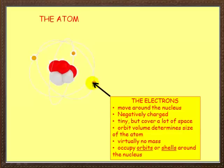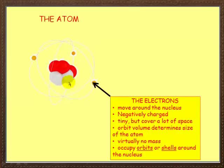They have virtually no mass — compared to the protons and neutrons, they are tiny. What they do is occupy orbits or shells around the nucleus. Some books refer to them as orbits, some as shells, some books even might call them energy levels. But that's where electrons live — orbiting around the nucleus.